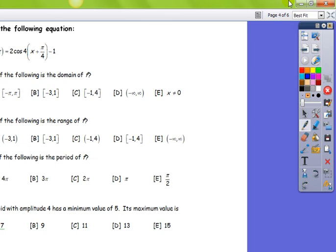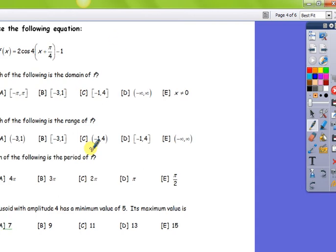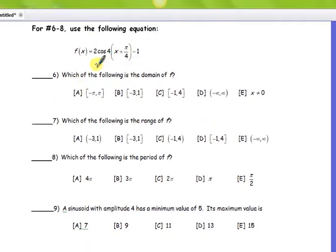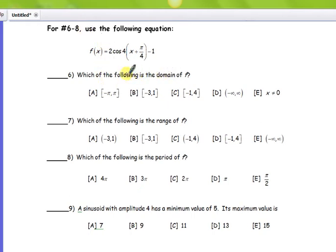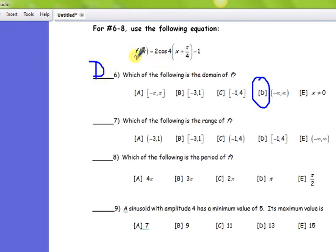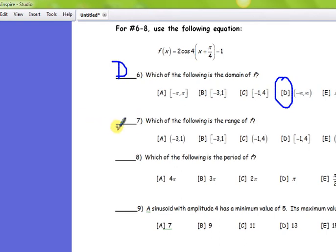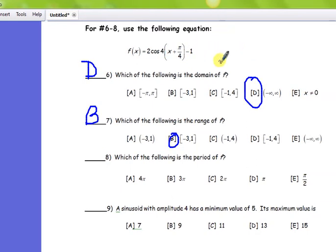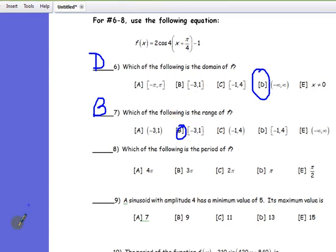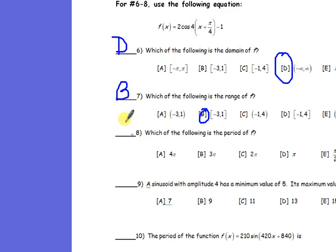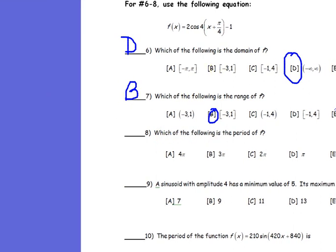Questions 6 through 8 refer to the graph given here. The domain of this graph is going to be all real numbers — letter D — due to the fact that there are no left and right endpoints. It's periodic, which means it's continuous always. The range does have its restrictions, so the range for this one is going to be letter B, mainly because the amplitude is 2 and you're starting at the bar at negative 1 — going up and down 2 from that negative 1 gives you those y-values. The period is determined by the 4: 2π over 4 is the same as π over 2, so the period is letter E.